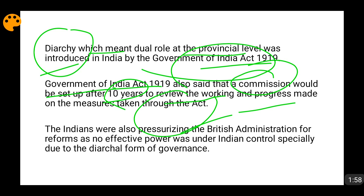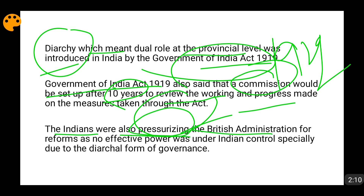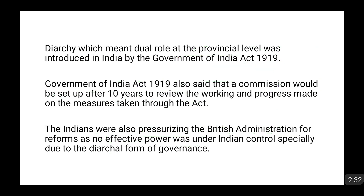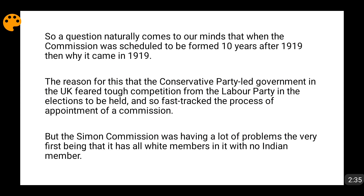By this logic, that commission had to come in 1929. But a lot of things were happening in the background. Indians were pressurizing the British administration for effective power, because the power given to Indians was nothing at the ground level — there was no real Indian control. This diarchal form of governance was a farce, as almost every important power remained in British hands. Indians had been calling for reforms for a very long time.